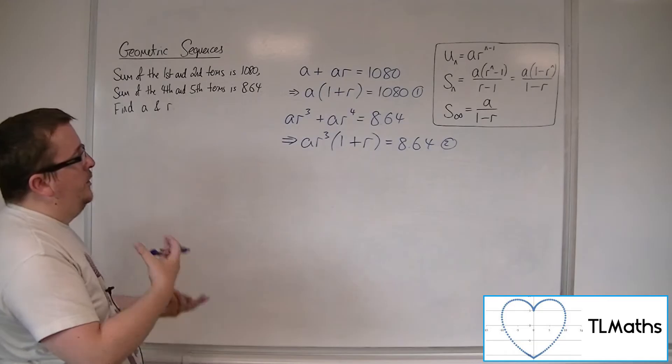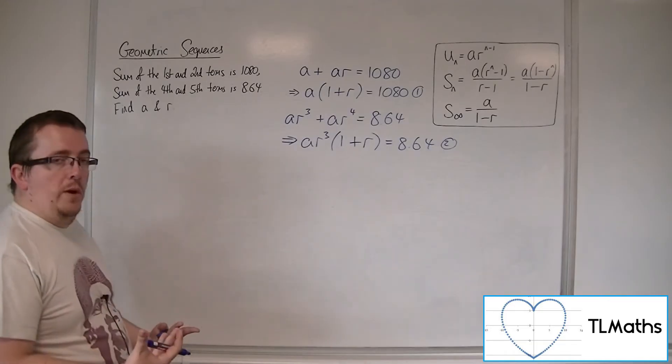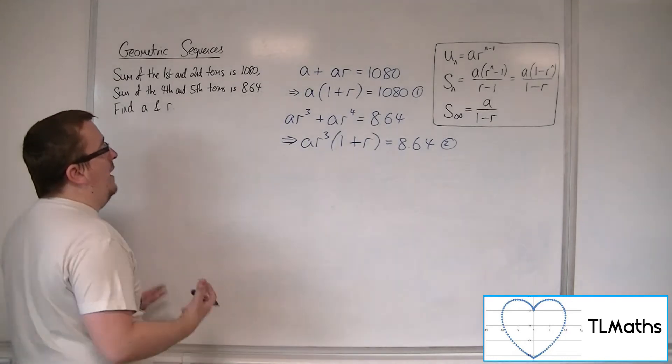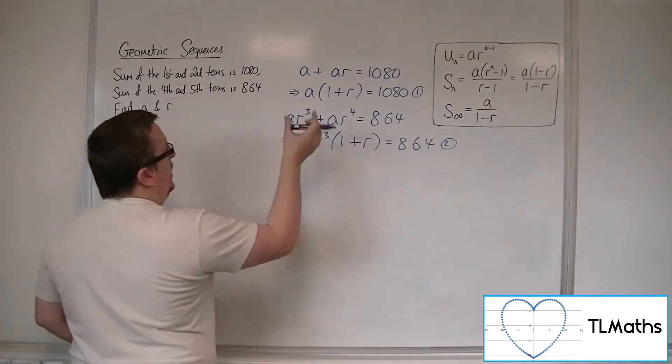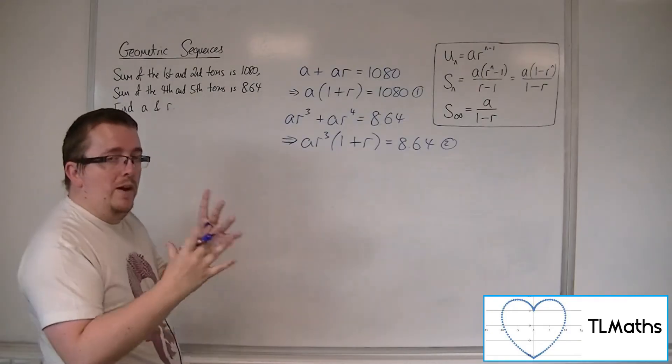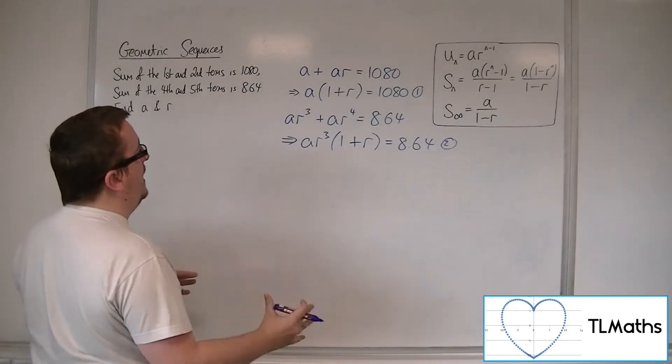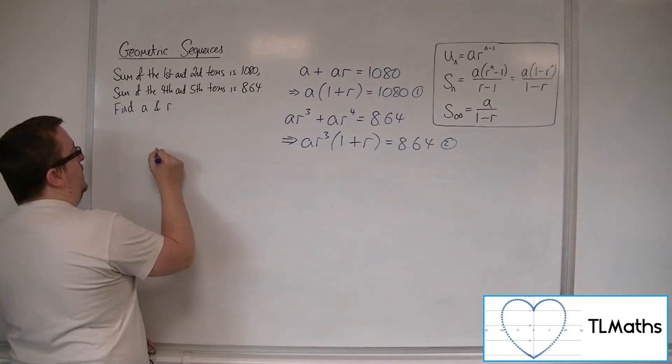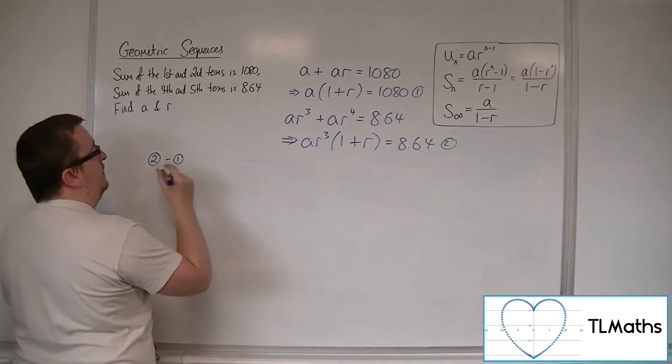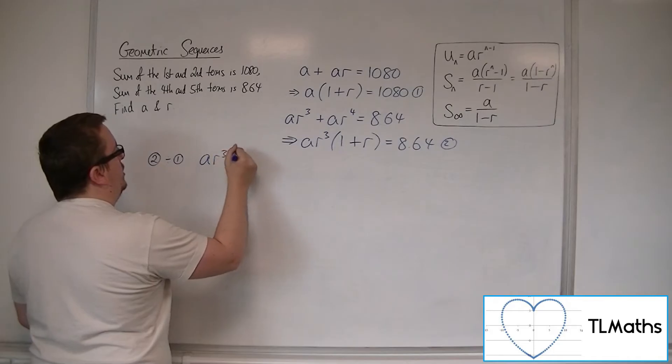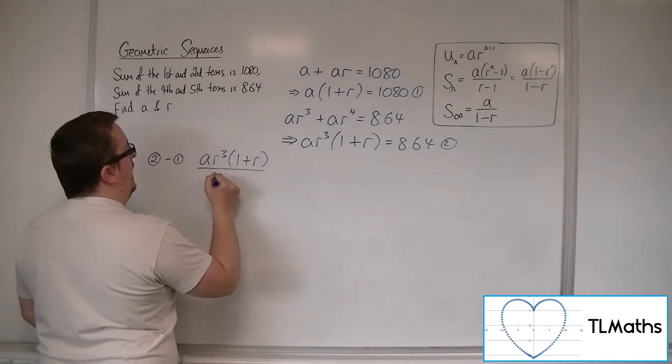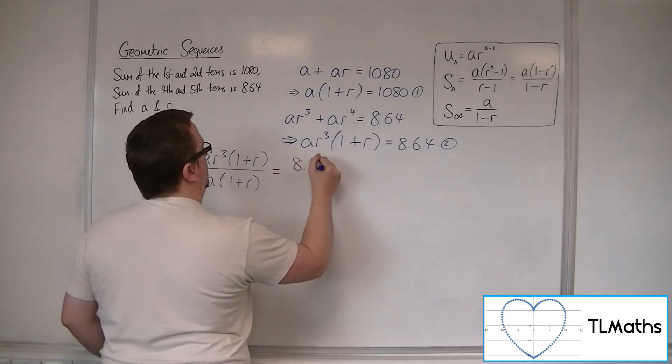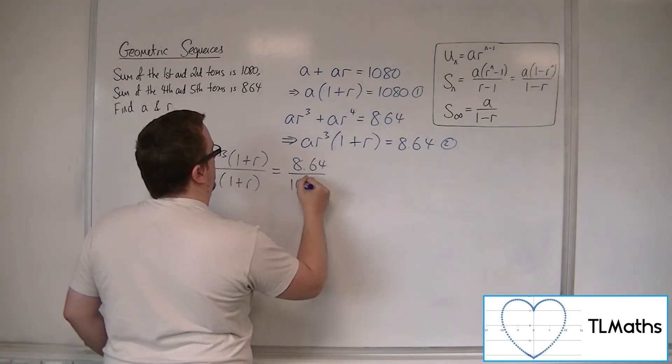With that, you can say I've got these two equations. I can now use a similar method and have equation 2 divided by equation 1. Because the 1 plus R bracket will disappear, as will the A. So we're going to have equation 2 divided by equation 1: A R cubed times 1 plus R over A times 1 plus R equals 8.64 over 1080.